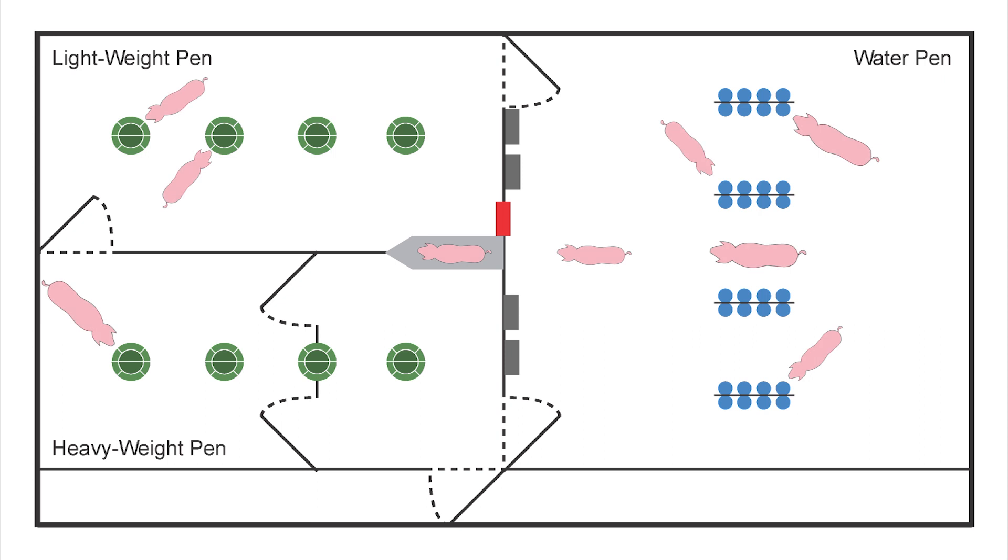In the Weight Watcher mode, the survey scale diverts pigs into the appropriate feeding area based on a predetermined weight set point.